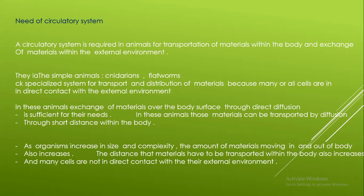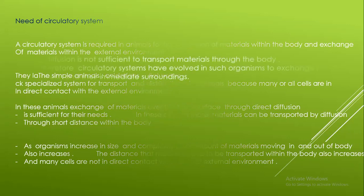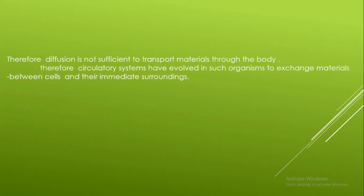As organisms increase in size and complexity, the amount of materials moving in and out of the body also increases. The distance that materials have to be transported within the body also increases, and many cells are not in direct contact with the external environment. Therefore, diffusion is not sufficient to transport materials through the body, and circulatory systems have evolved in such organisms to exchange materials between the cells and their immediate surroundings.